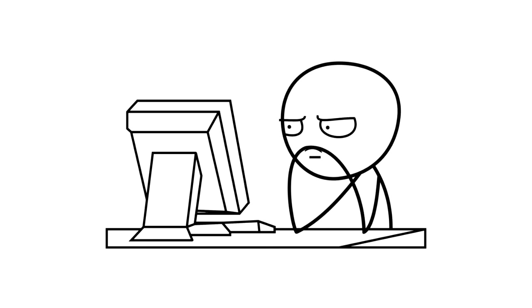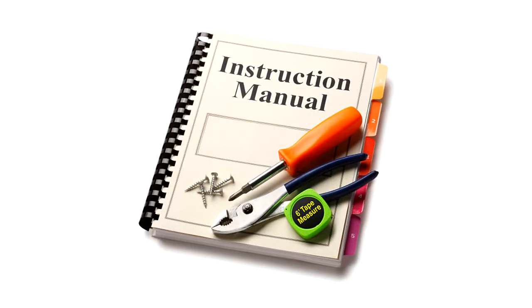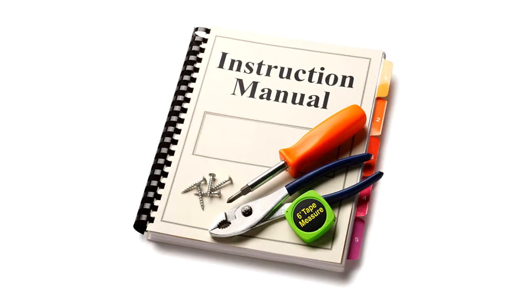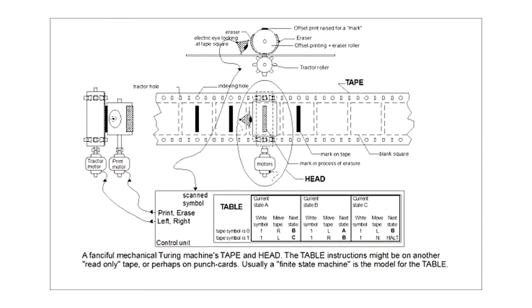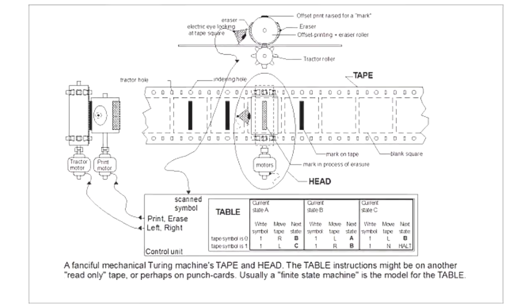In order to do a different process, it will need a certain rule in order to do the process. This is where the Turing machine comes in.